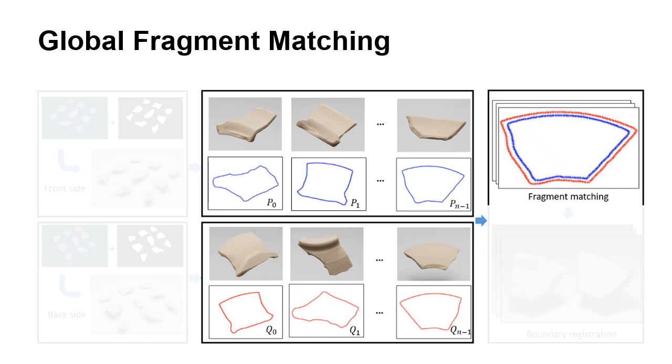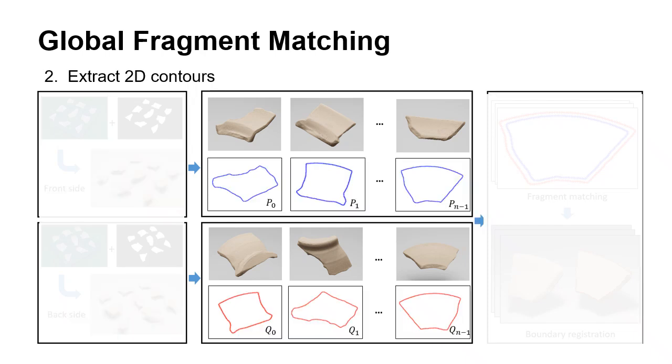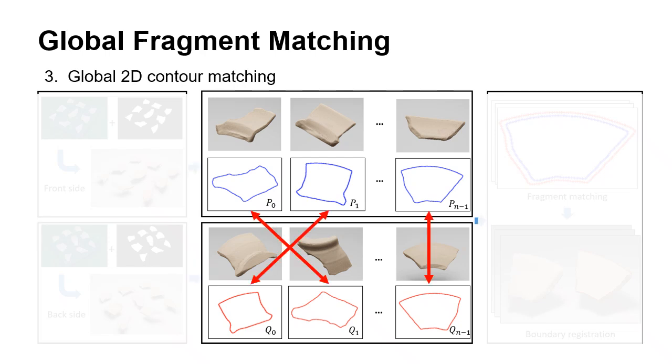Then, we propose a 2D contour-based method to find right matches of the two sides for each fragment. Here, we first separate the 3D model of each side into individual fragments by a region-growing method. Then, we extract their maximum 2D contours through PCA. Next, we compare the similarities of 2D contours to find the correct match.